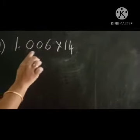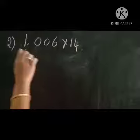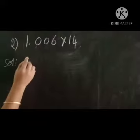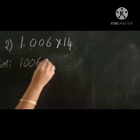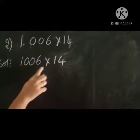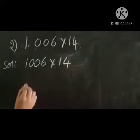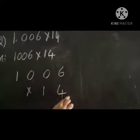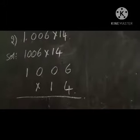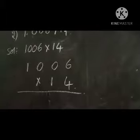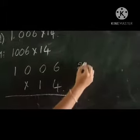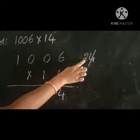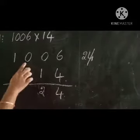Next example: 1.006 into 14. First we remove the decimal point. Multiply 1006 into 14. Starting with 4: 4 sixes are 24 — write 4, carry 2. 4 zeros are 0, plus 2 equals 2. 4 zeros are 0. 4 ones are 4. So the first partial product is 4024.